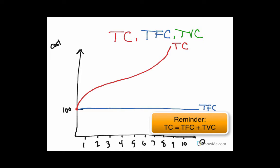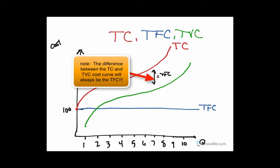And total variable cost — all it is, is it's parallel to the total cost curve, just shifted down by the total fixed cost, which in this case is 100. And it just starts at 1, because there's no total variable cost at any quantity before 1. So we're going to start right here, and then it just follows the total cost curve parallel — this distance right here is equal to total fixed cost. And that's total cost, total variable cost, and total fixed cost.